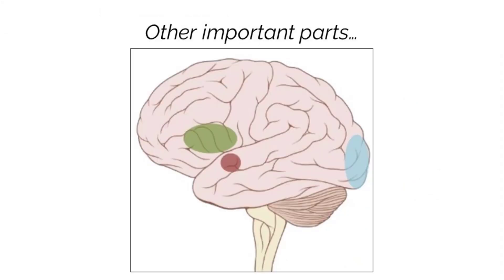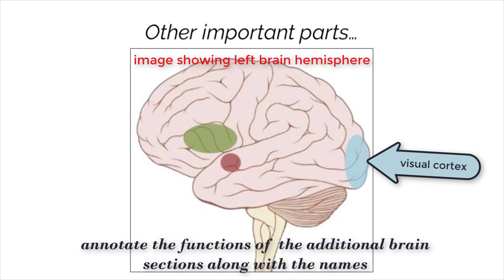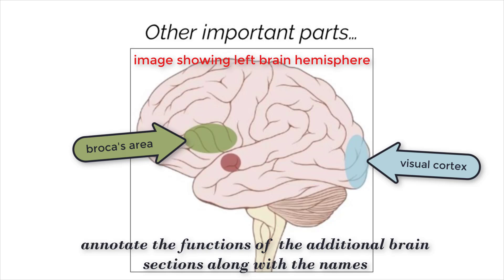In addition to the structures you have already learned, there are three more parts of the brain that require some attention. First, the visual cortex is located in the back of the brain. This is where signals from photoreceptors are processed, which gives us our visual perception or sight. Next, Broca's area is located within the frontal lobe of the left hemisphere only, not the right. This area is responsible for speech production. If damaged, individuals cannot produce meaningful speech even though they try to.